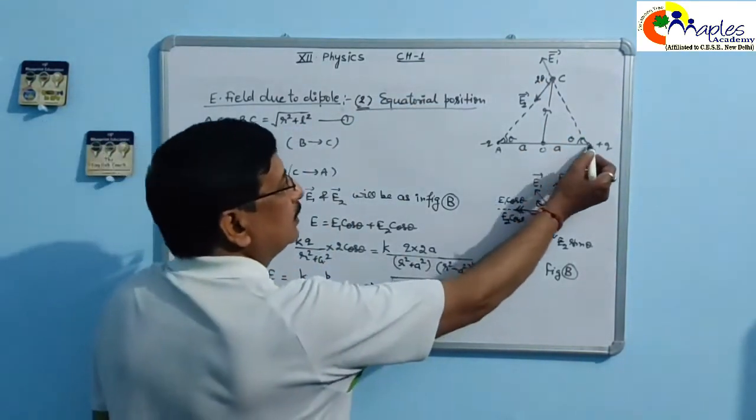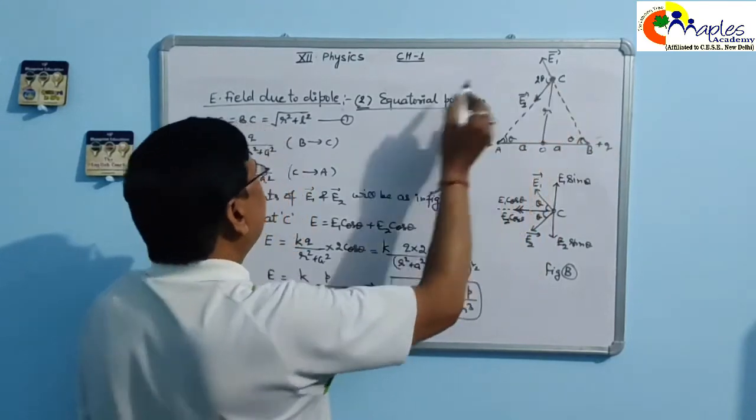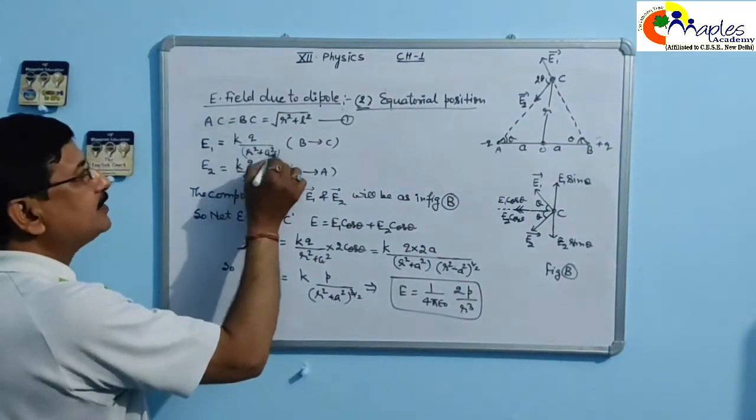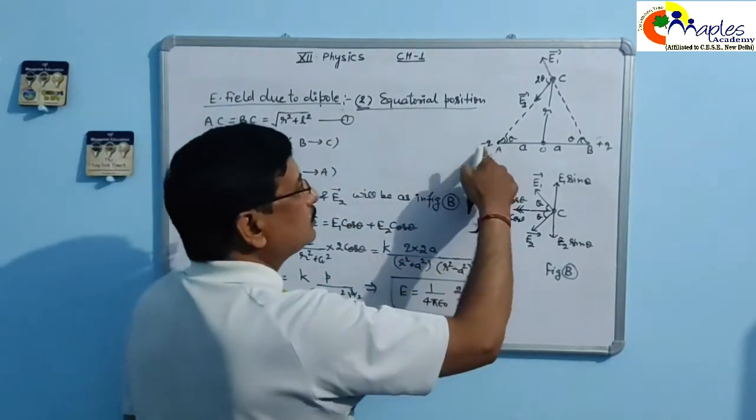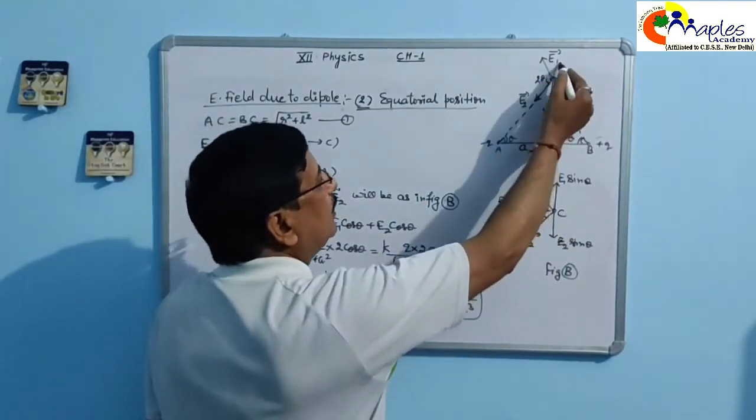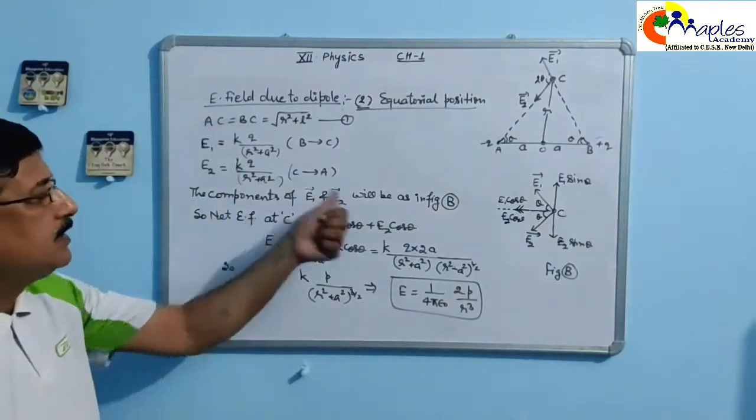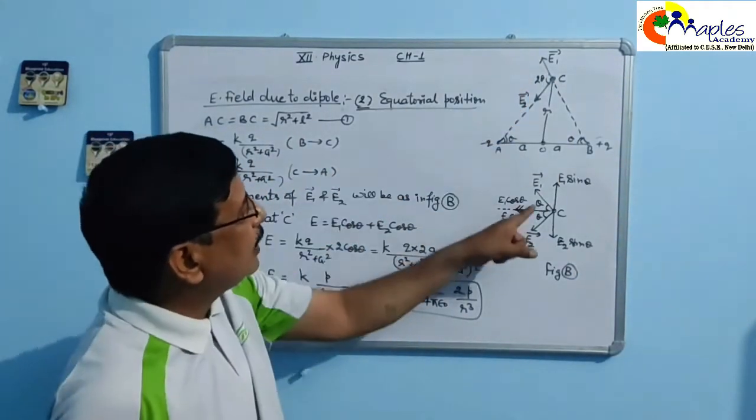Due to this, we have field points here. KQ upon R square plus A square for E1 and E2. So what is the component? We will take the component.